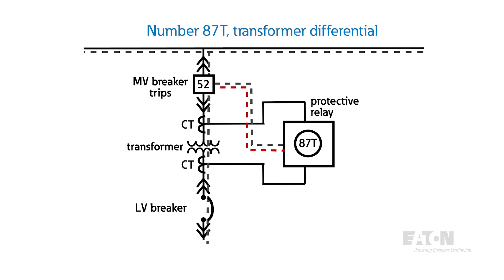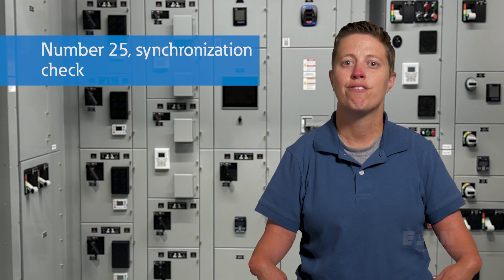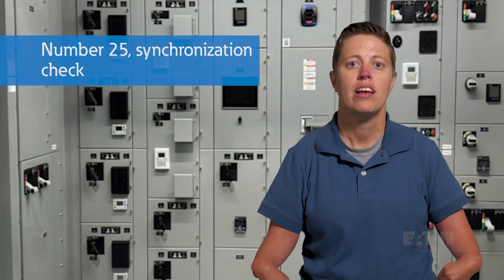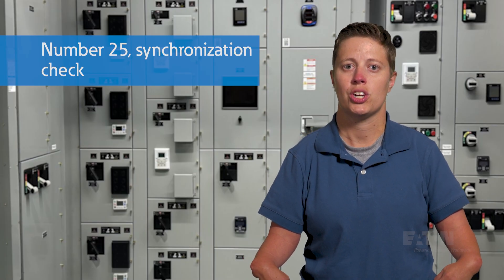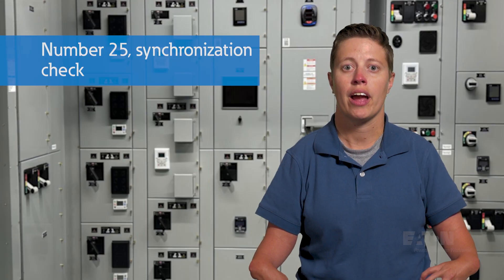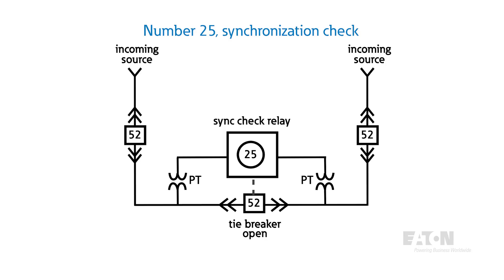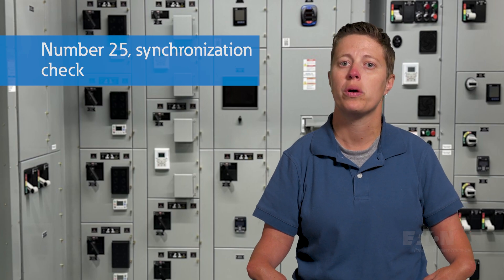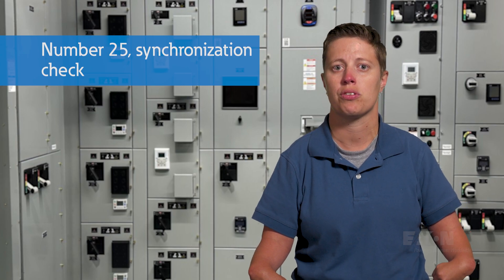And finally, Number 25, synchronization check. The synchronization check, or sync check function, verifies that the voltage, phase angle, frequency, and phase rotation across two sides of a breaker are the same prior to closing the breaker. This is very important for main-tie-main systems with automatic transfer functionality.